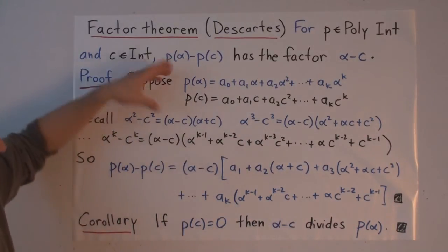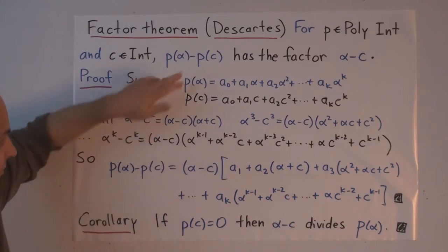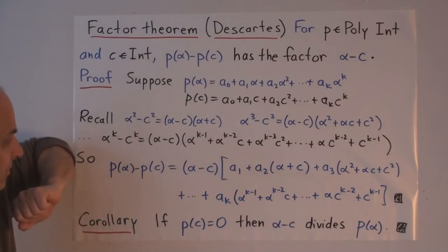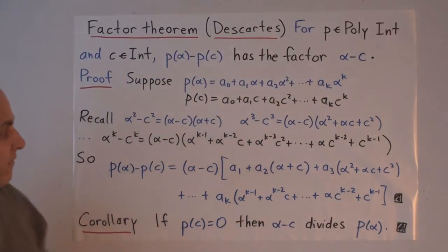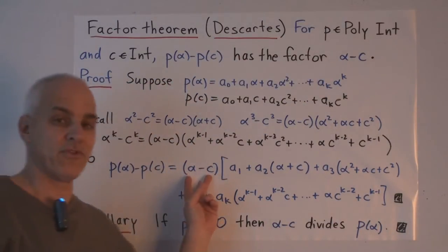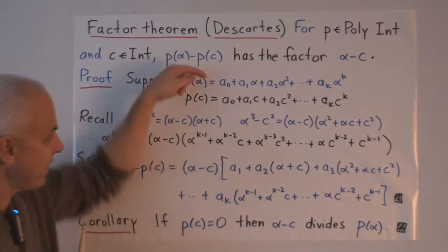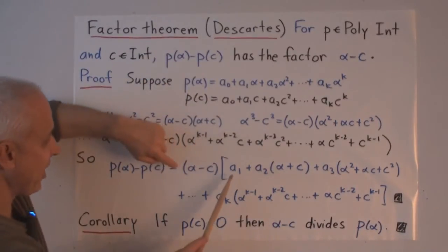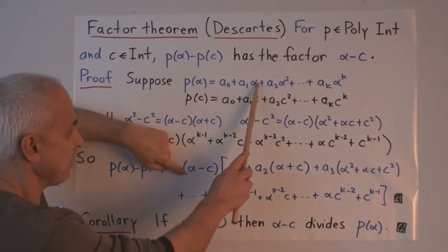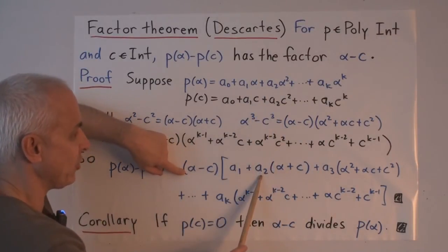And we're going to apply it immediately to prove the theorem, because we're just going to take the difference between this line and this line. So P alpha minus P of C, which is what we are interested in. And in each of these terms, one over the other, we're going to take the difference and we're going to see that there's a factor of alpha minus C in each of those terms. A zero minus A zero is zero. This one minus this one gives us A one times alpha minus C.